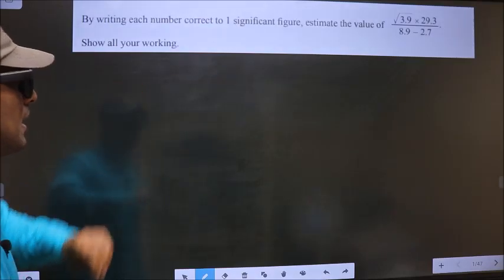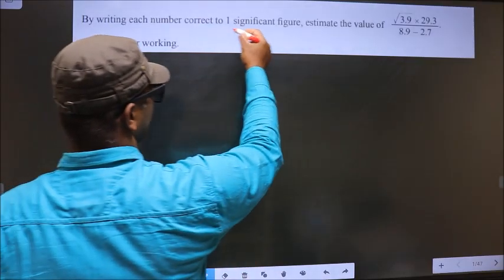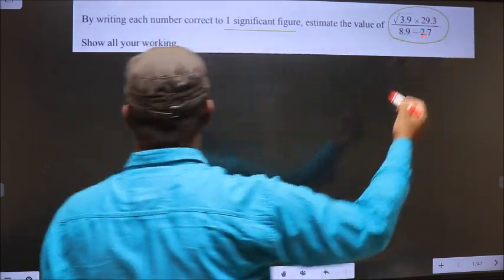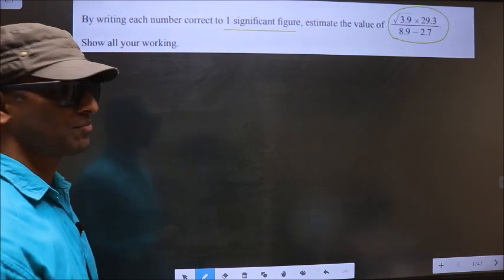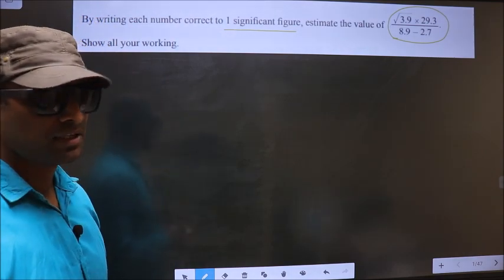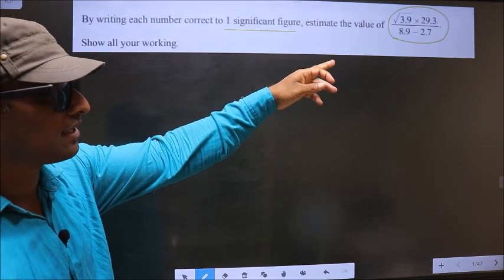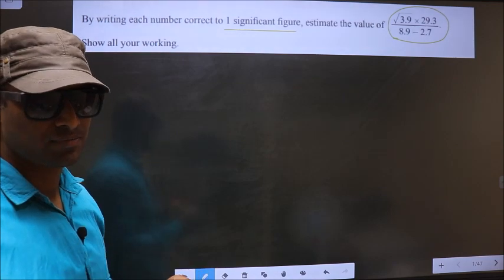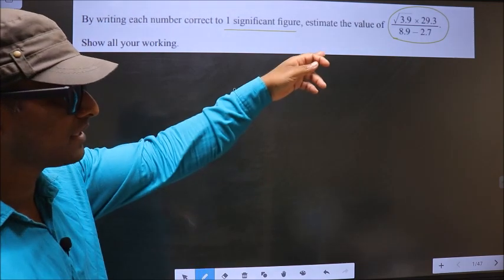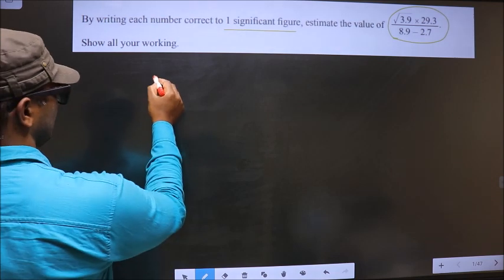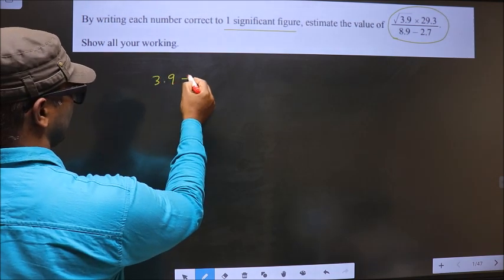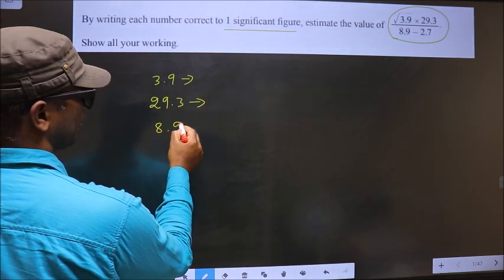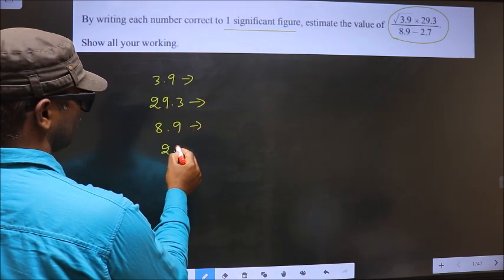By writing each number correct to one significant figure, estimate the value of this one. Show all your working. First step, whatever values are present in that, we should round them off to one significant figure. The values present over there are 3.9, 29.3, 8.9, and 2.7.